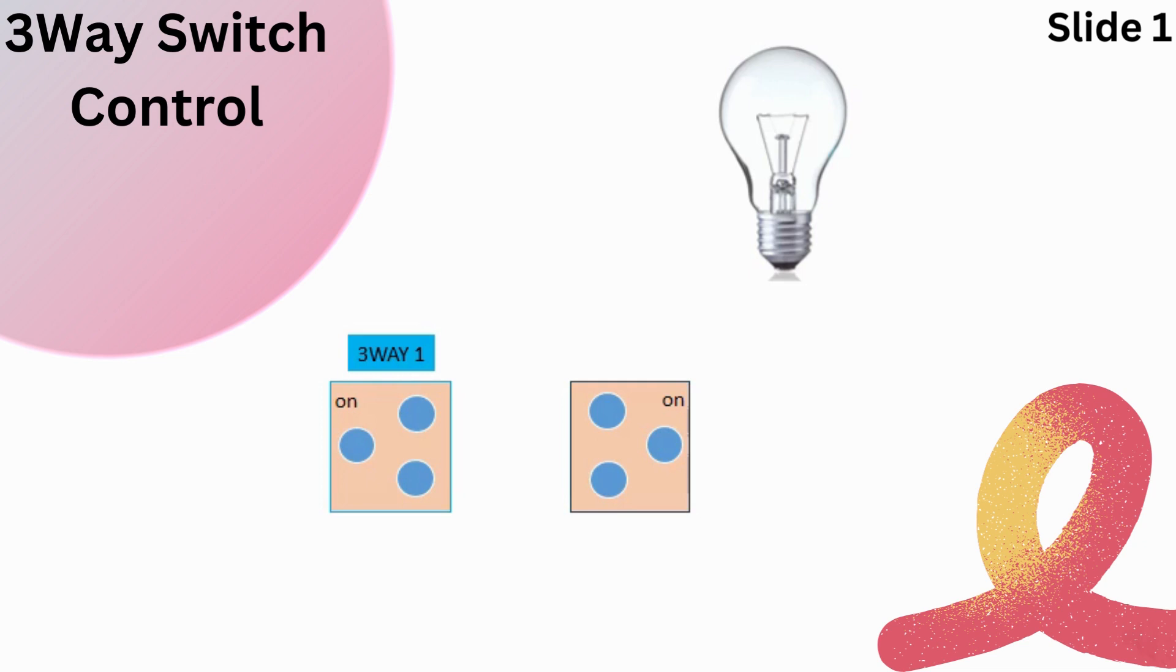At the second switch, which could be in a different part of the room or hallway, you can also flip it to the on position. This completes the circuit by connecting power from the traveler wire to the common terminal on the second switch.